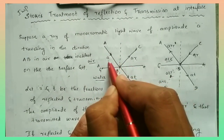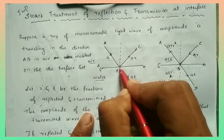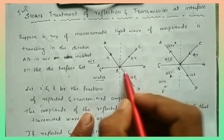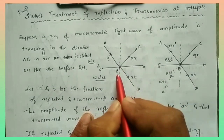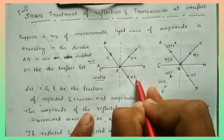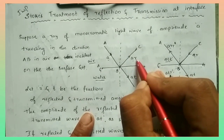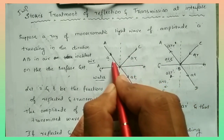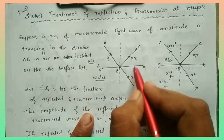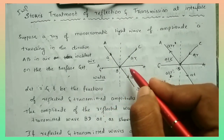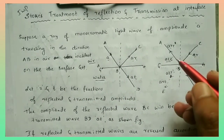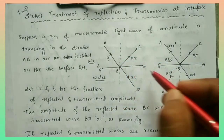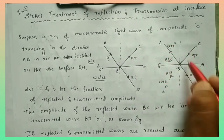When ray AB with amplitude A is incident, it is reflected back in the same medium along BC with amplitude AR, and partially transmitted along BD with amplitude AT. Here R and T are the fractions for reflection and transmission respectively — AR and AT represent the change in amplitude compared to the incident ray. Next, according to the principle of reversibility, if the reflected and transmitted waves are reversed, we analyze the resulting rays.